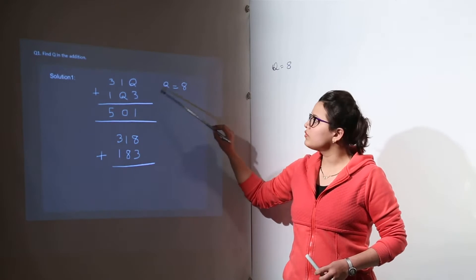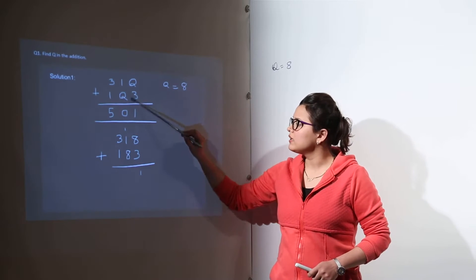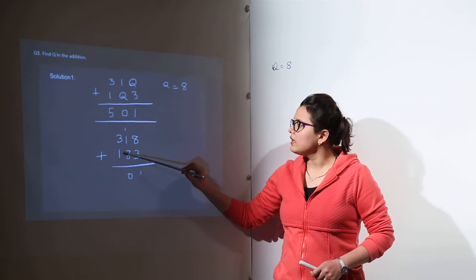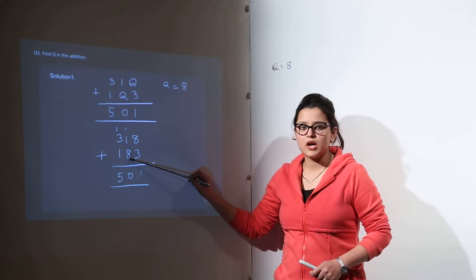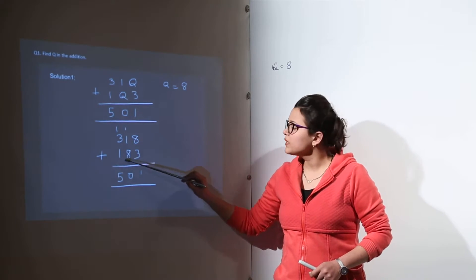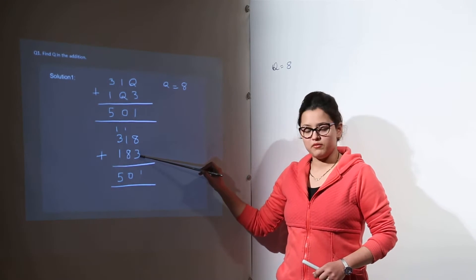So for that I have taken up q as 8. If you take q as 8, you would get 318 and 183. Just place the value of 8 on both sides as it is written for q. So you do the totaling: you would get 8 plus 3 as 11. You write 1 and made another carry.